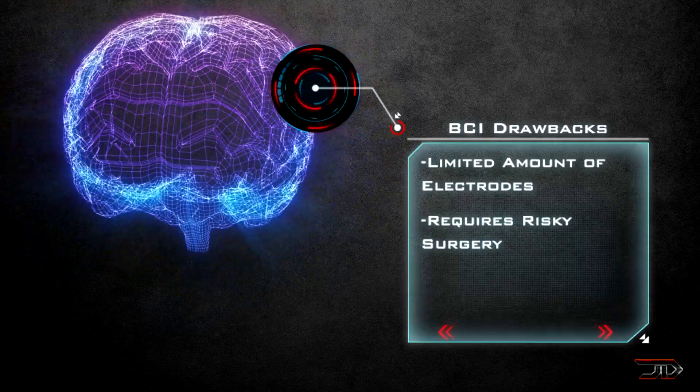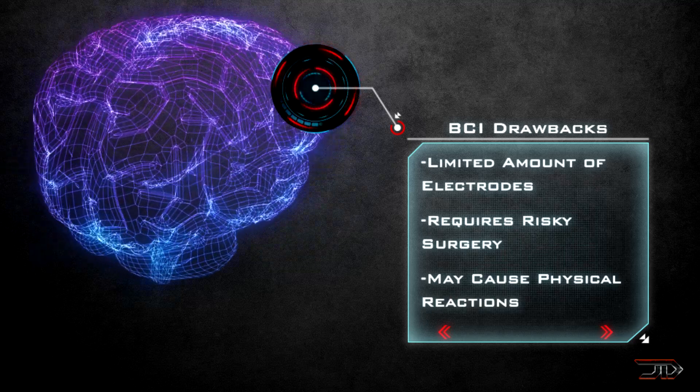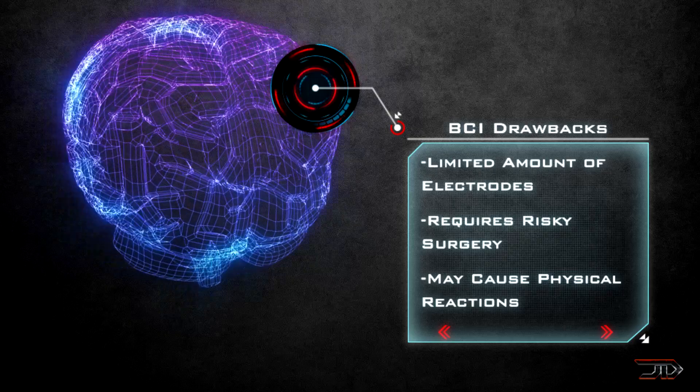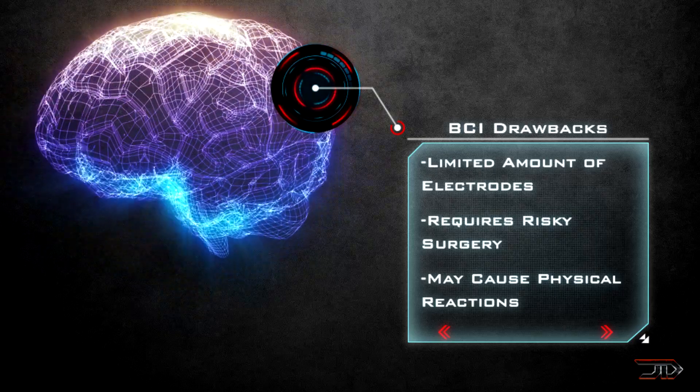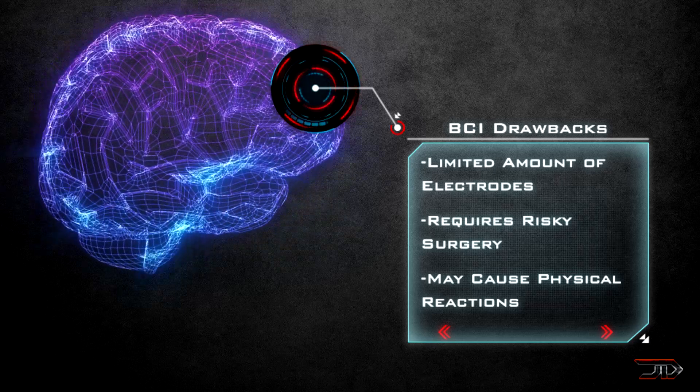Now, there are slight problems associated with this type of implant, because it's not permanent and it requires risky brain surgery. We also have to keep in mind that this is a very limited amount of electrodes used, and there are literally millions of neurons just in the visual cortex alone.